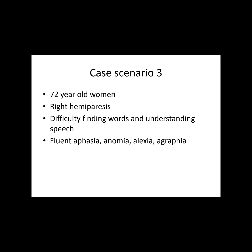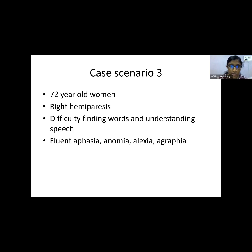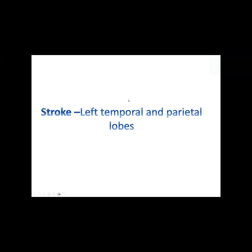Case: A 72-year-old woman with right hemiparesis, fluent aphasia, expressive anomia, alexia, and agraphia. Since fluent aphasia is present, there is temporal lobe involvement, and anomia, alexia, agraphia indicate parietal lobe involvement. Right hemiparesis indicates left upper motor neuron involvement. This patient had a left temporal and parietal lobe stroke.